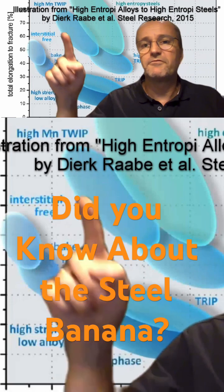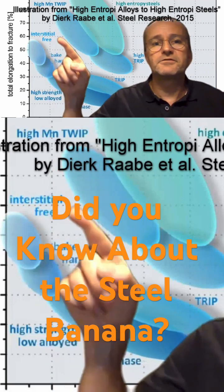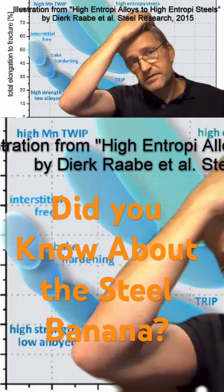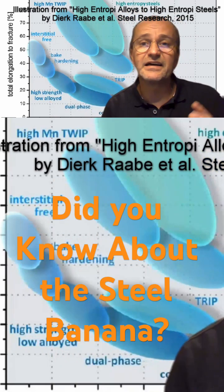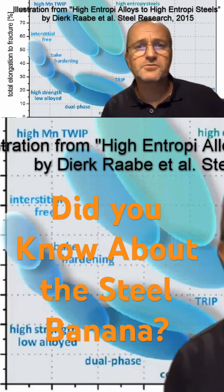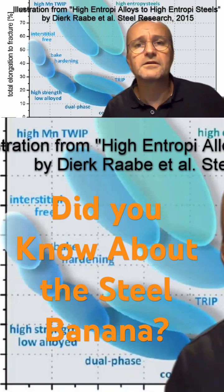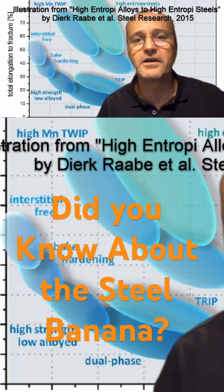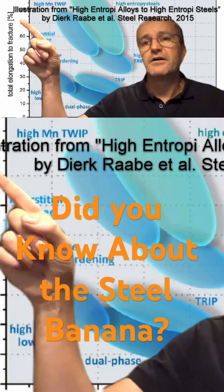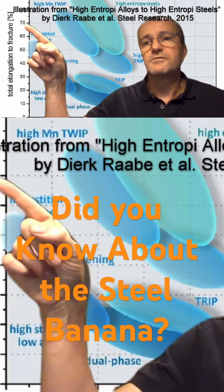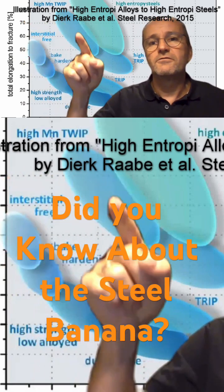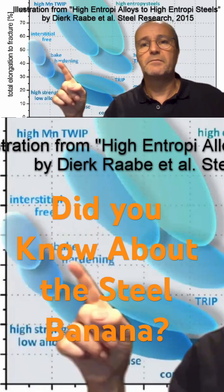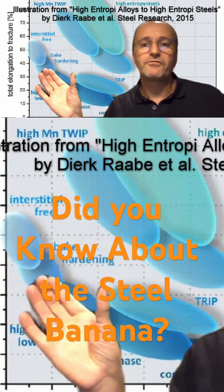A few years ago I learned about the TRIP steels. TRIP is used a lot in crash absorption and has also been used a lot in military applications, because it can absorb a lot of energy during impact. The area below the curve — the area in this place — represents the amount of energy absorbed.